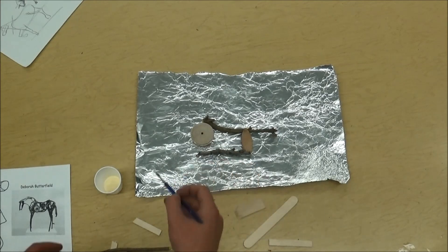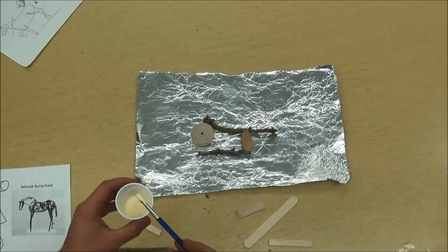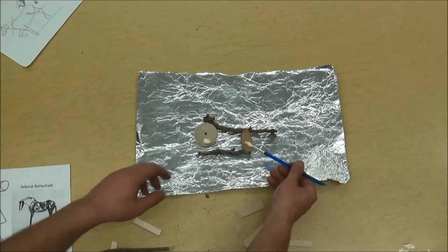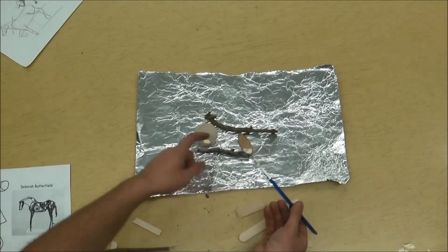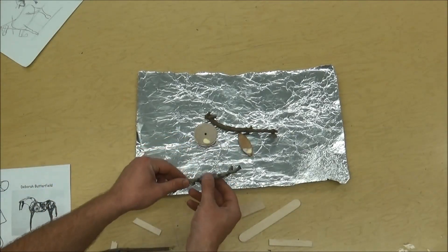So once I arrange it, we're just going to start with the body today. Once you get it figured out how you want it, put your glue on where you'd want it. And we're going to stick the pieces of wood together with the wood glue.